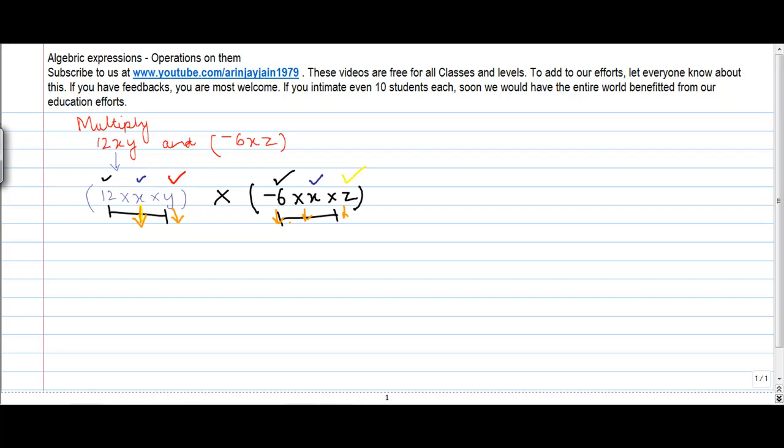So I can regroup them in a manner that this is written as similar things. So I take the numbers which is 12 here. Then I multiply this by minus 6. Then I take x from here and write multiplied by x. I take another x from here and again write x. I take y from here into y, and then I bring down the last number which is z.